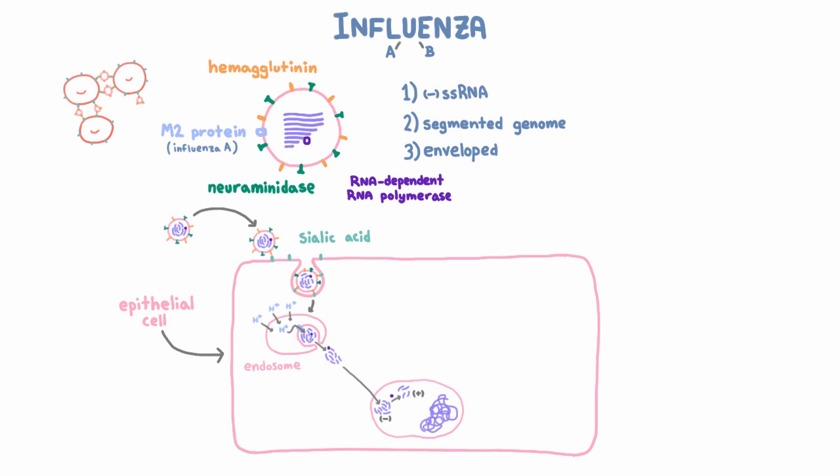Once the virus has made positive-stranded RNA, those are translated into proteins, and those proteins get the whole viral machinery going. They replicate influenza's genome and create more positive-stranded RNA to make necessary proteins, and new virions are eventually assembled from the negative-stranded RNA and proteins.